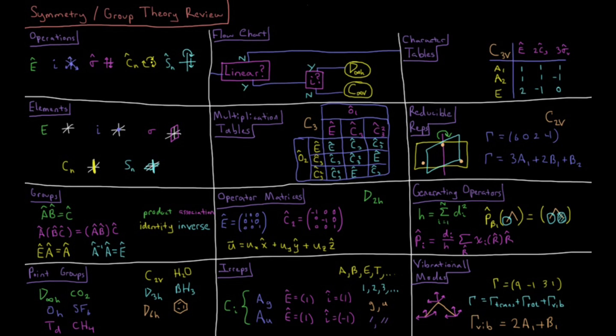This video is a review of the Symmetry and Group Theory chapter in the Physical Chemistry Playlist. We start by defining symmetry operations, including the identity E,